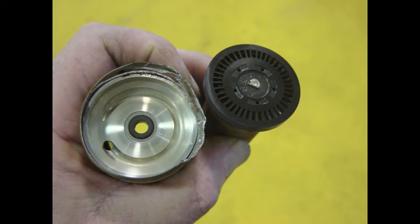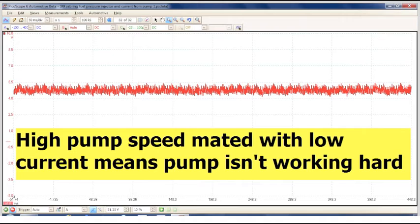The current draw of any motor is affected by how hard the motor has to work to do its job. A fuel pump that has a real high pump speed, but a very low current draw, generally means that the pump isn't working very hard.